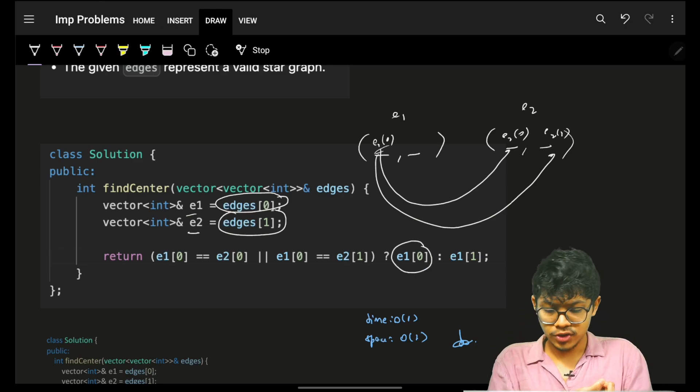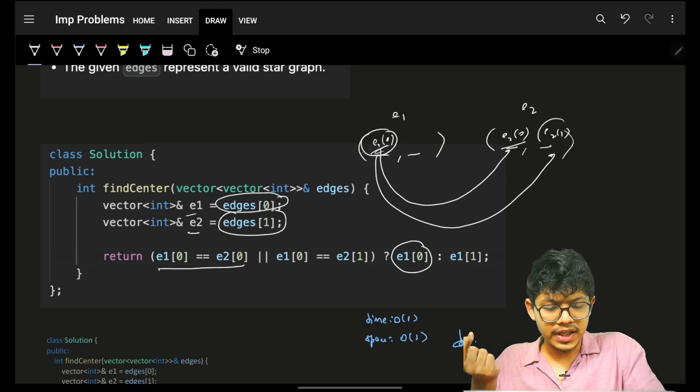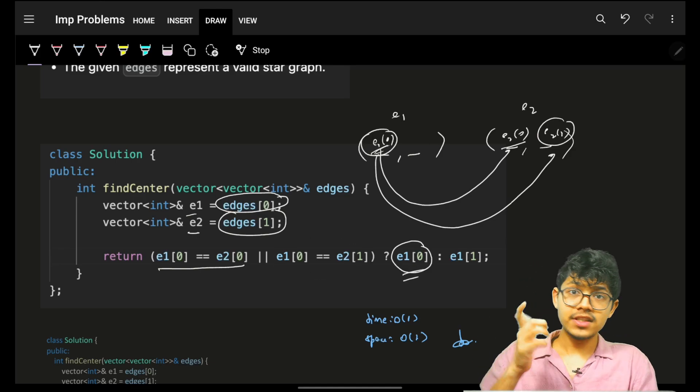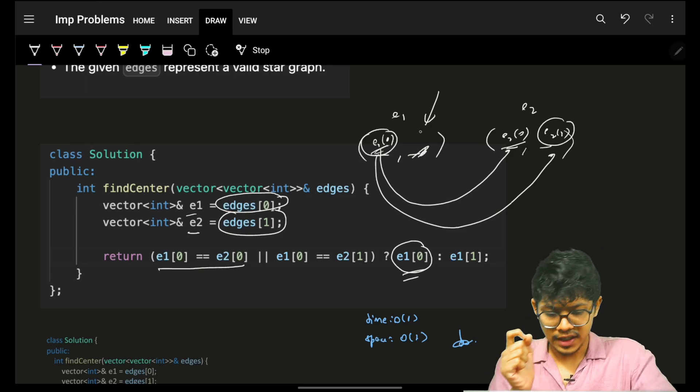So as you can see, I compare e1[0] with e2[0] or e1[0] with e2[1]. In that case, I can simply say e1[0] is the common one. If not, then for sure e1[1] will be the answer.